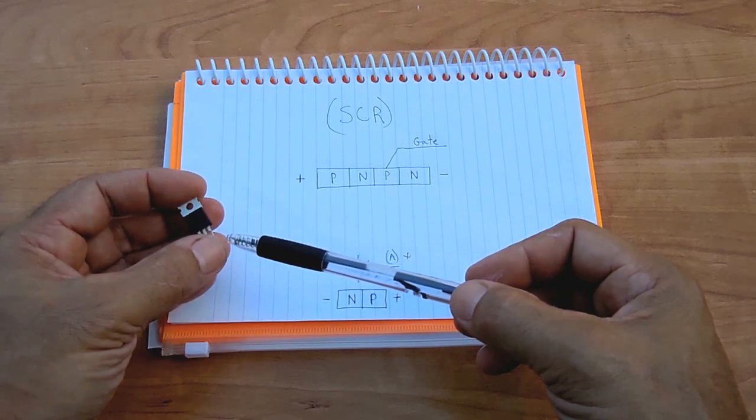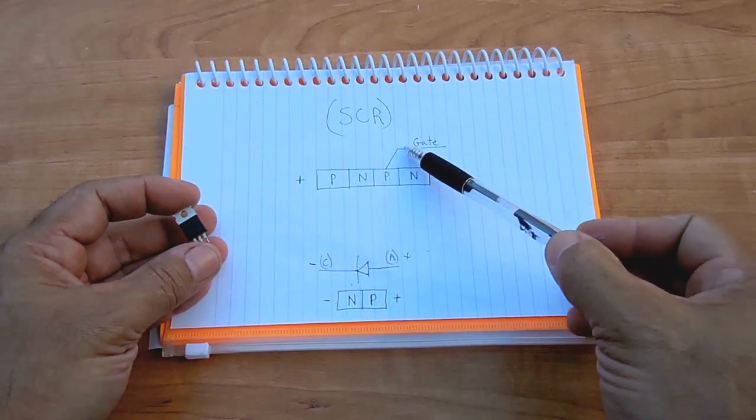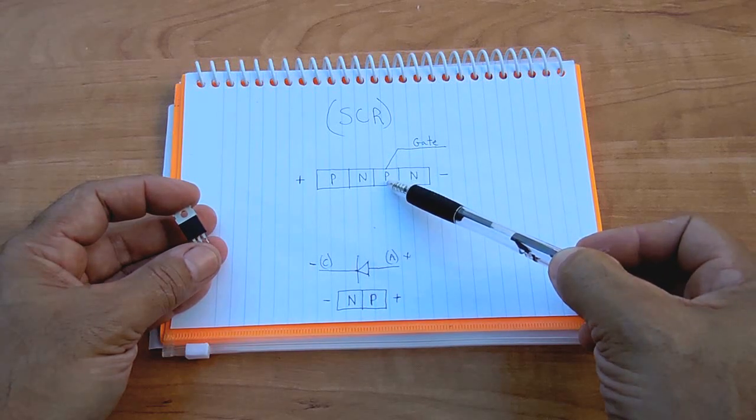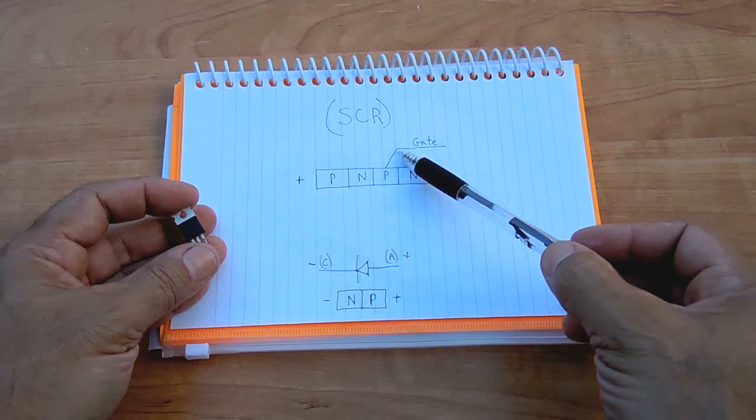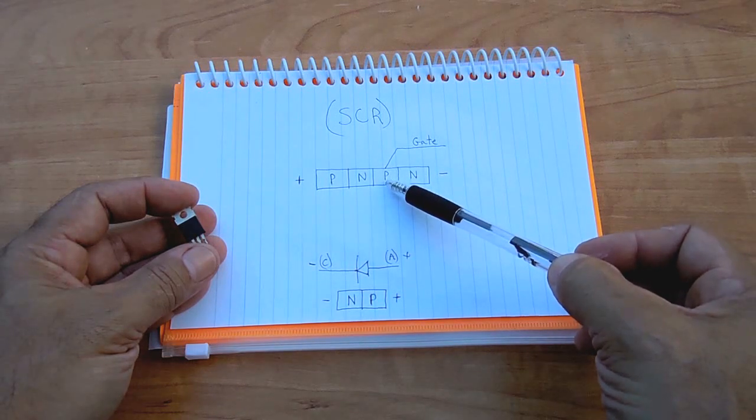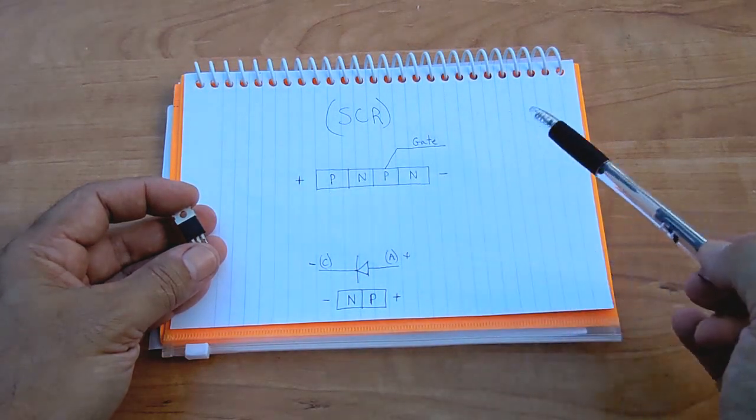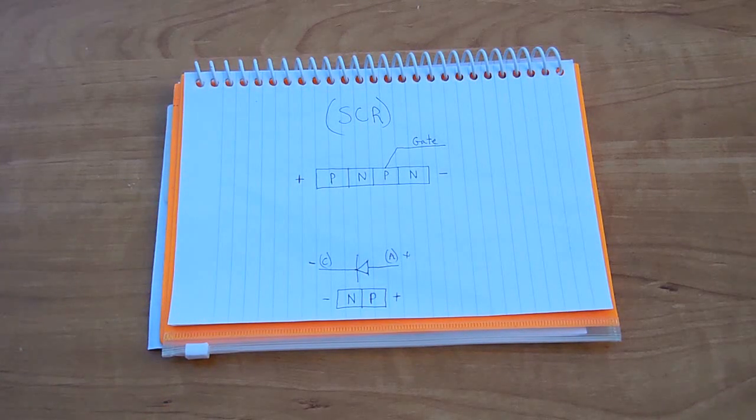The gate, which is the third pin on the right, is connected to the P type material located next to the cathode. Once a positive voltage is applied to that P type material, the SCR will then turn on. With SCRs, just like diodes, there is a forward voltage drop and it's a little higher with an SCR than it is for a single diode because you're going through more layers.